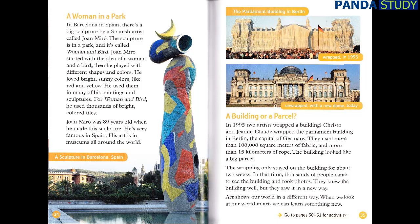A Woman in a Park. In Barcelona, in Spain, there's a big sculpture by a Spanish artist called Joan Miró. The sculpture is in a park and it's called Woman and Bird. Joan Miró started with the idea of a woman and a bird. Then, he played with different shapes and colors. He loved bright, sunny colors like red and yellow. He used them in many of his paintings and sculptures. For Woman and Bird, he used thousands of bright colored tiles. Joan Miró was 89 years old when he made this sculpture. He's very famous in Spain. His art is in museums all around the world.